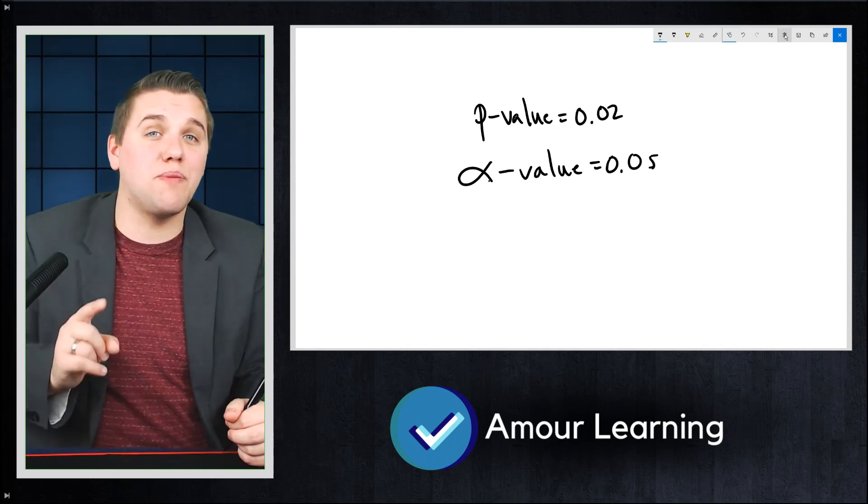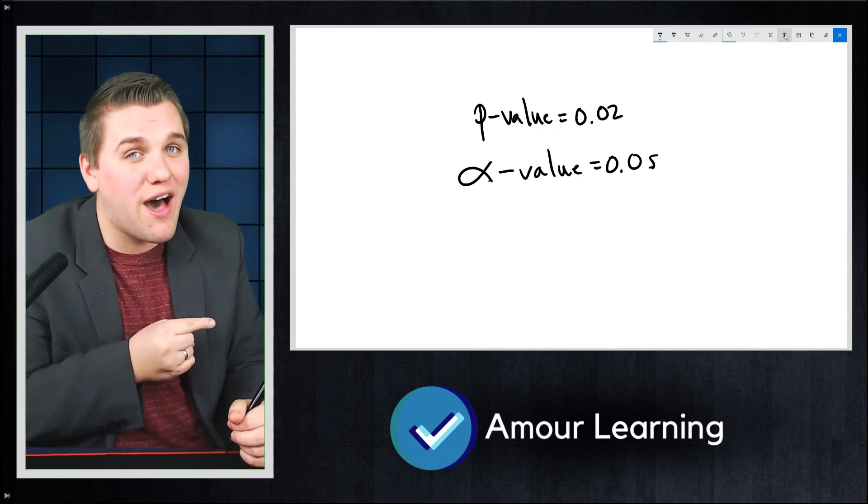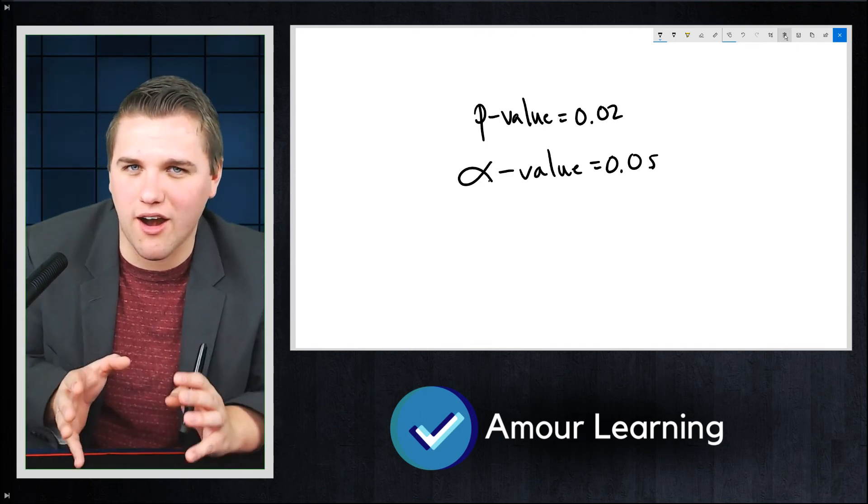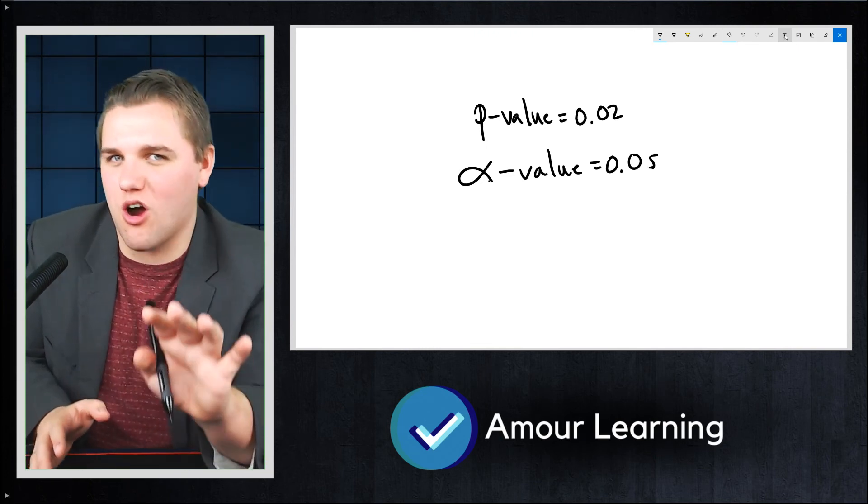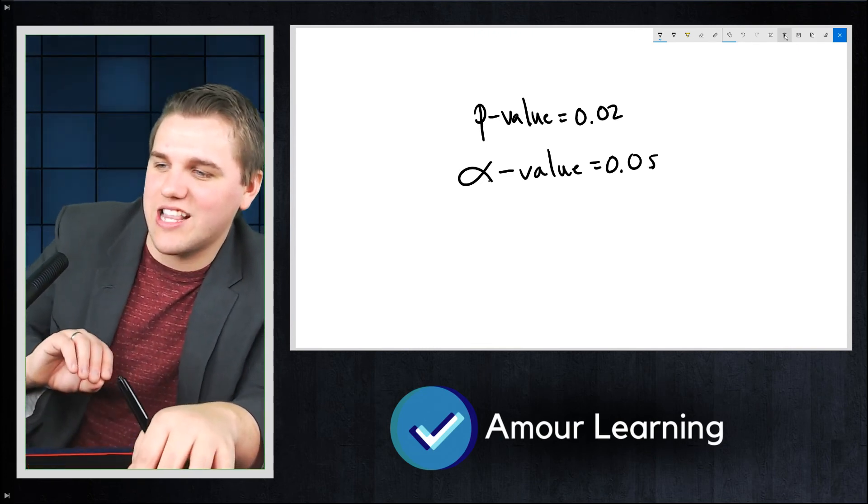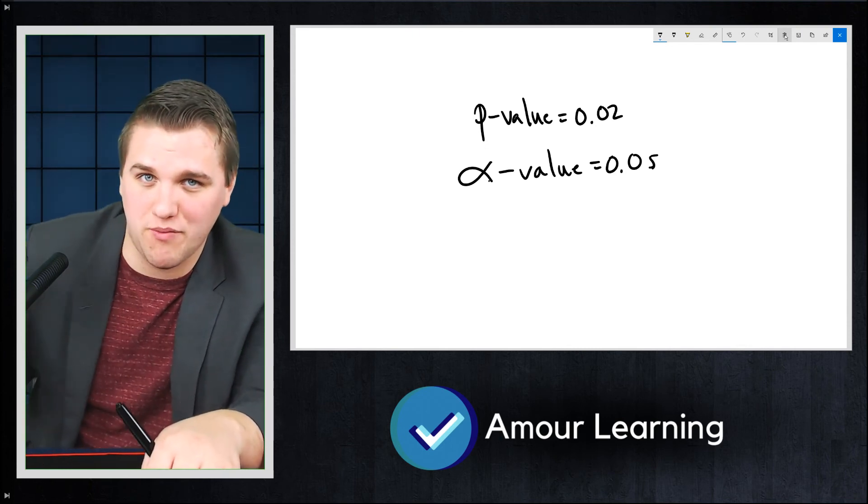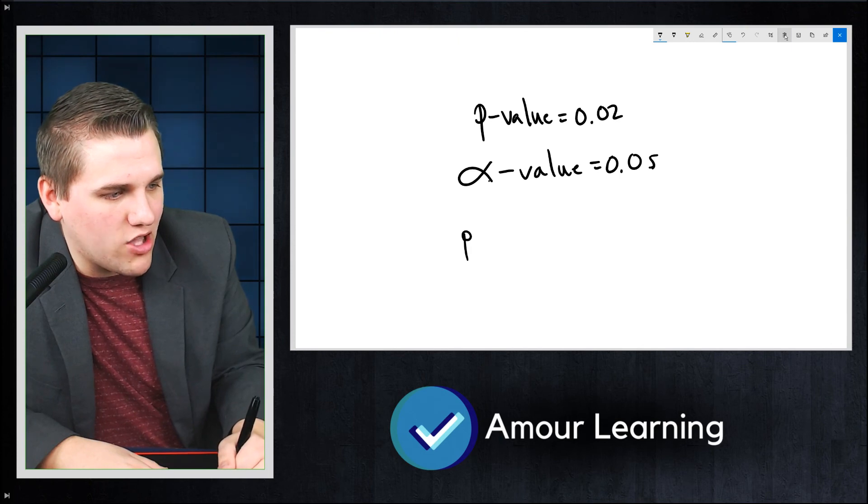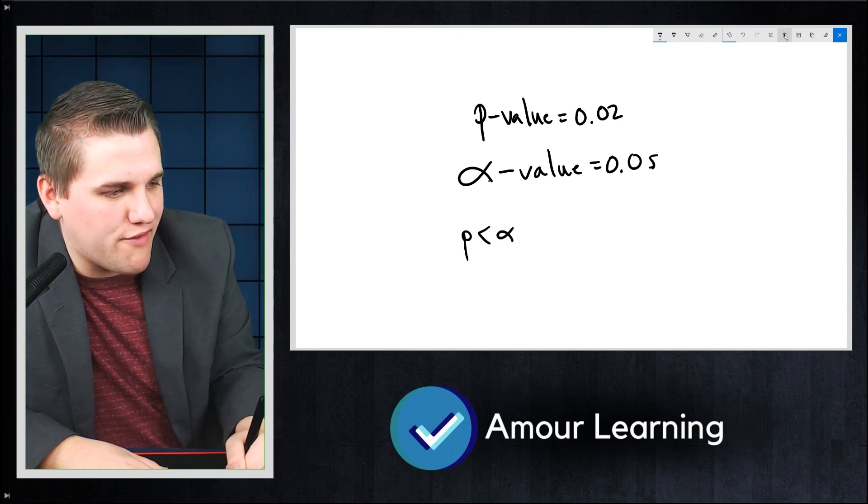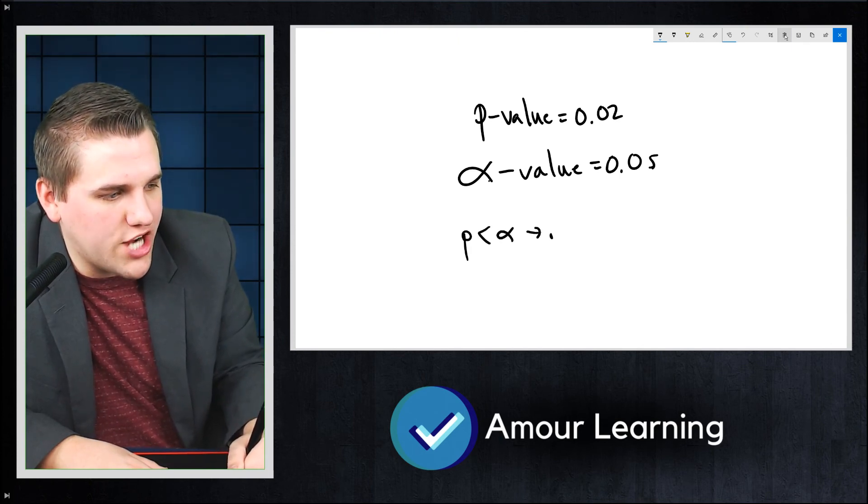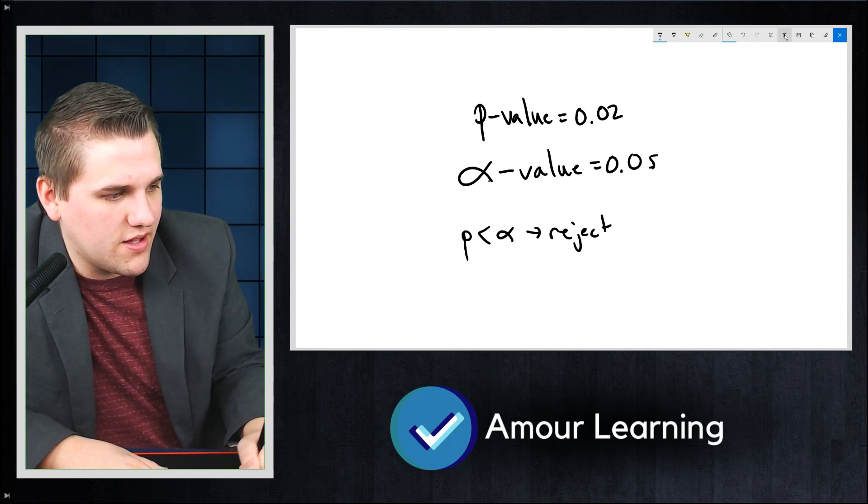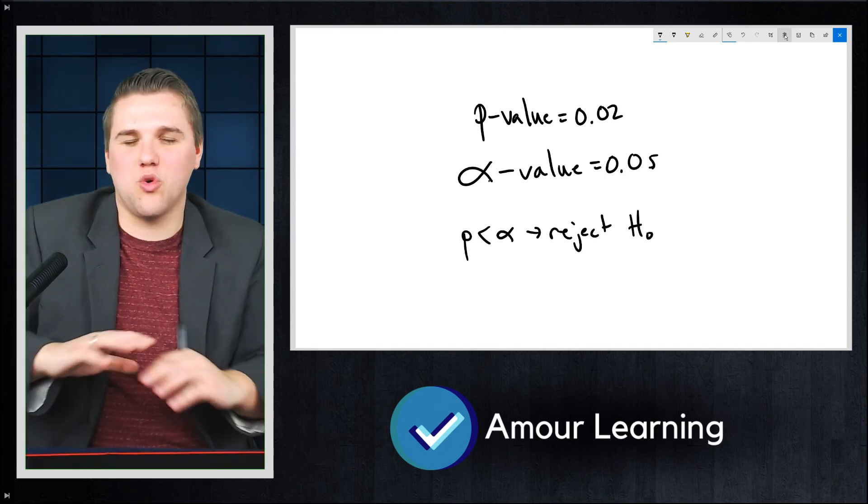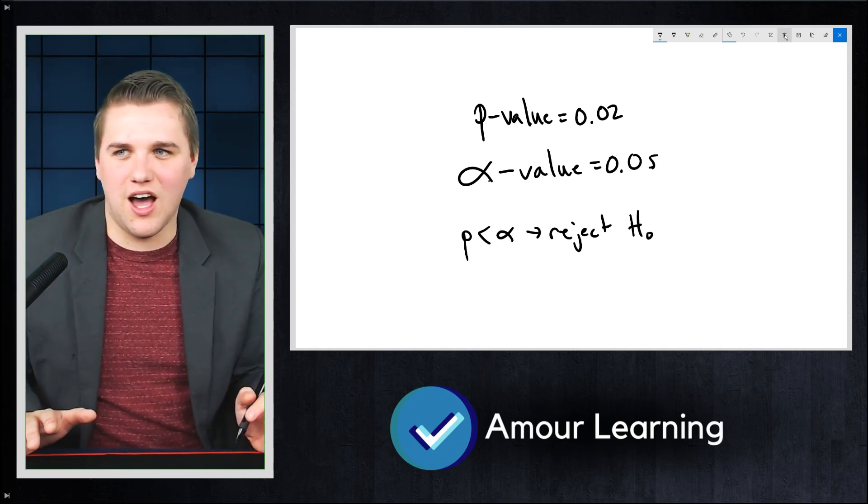So the idea is if your p-value is less than your alpha value, it's just so rare that it's not that your results are an anomaly, it's that the null hypothesis was false from the get-go. You would reject the null hypothesis. You would say, okay, this experiment is just way too rare to just happen.